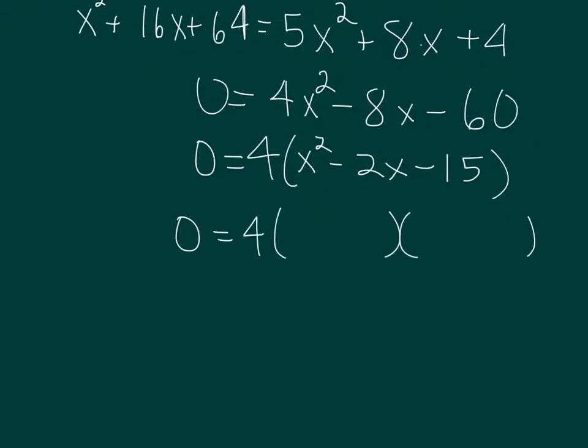But I know x squared minus 2x minus 15 is going to factor into x minus 5 and x plus 3. So we should get x is equal to 5, or x is equal to negative 3.